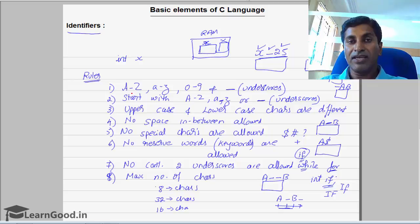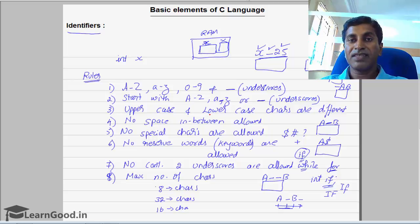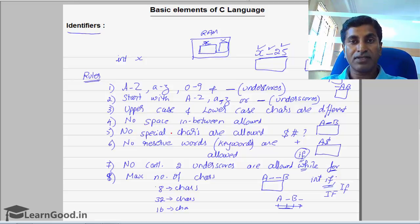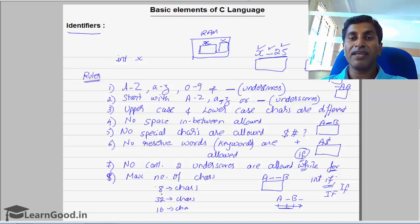To repeat once again: an identifier can be a combination of alphabets, digits, and underscores. It has to start either with an alphabet or an underscore. It's a case-sensitive language, so uppercase and lowercase identifiers are different. No space is allowed within an identifier. No special characters are allowed. No reserved words are allowed as an identifier. No two consecutive underscores are allowed. Maximum characters range from 8 to 32 depending on the compiler.